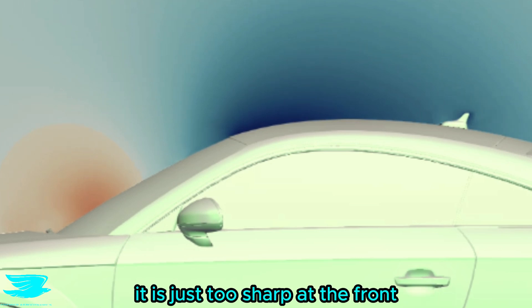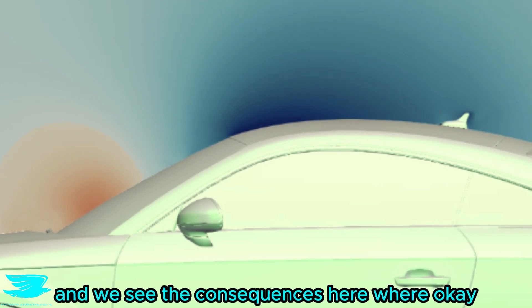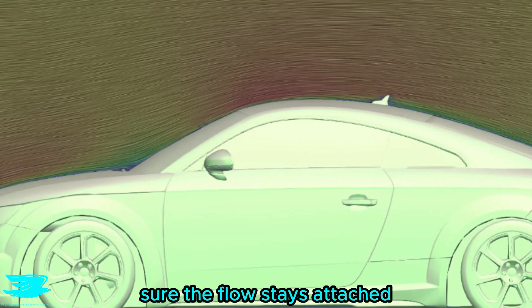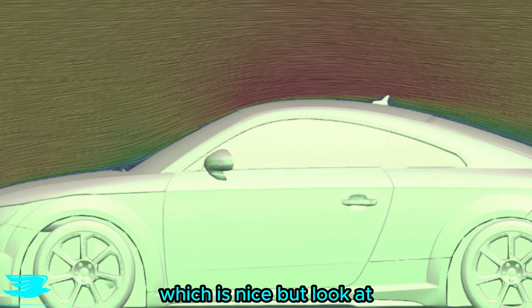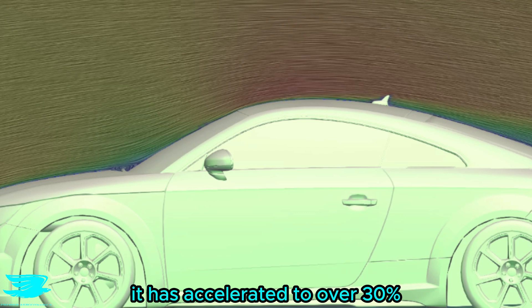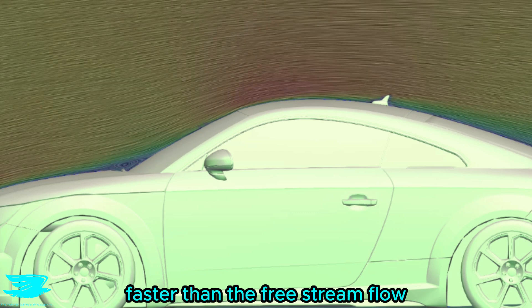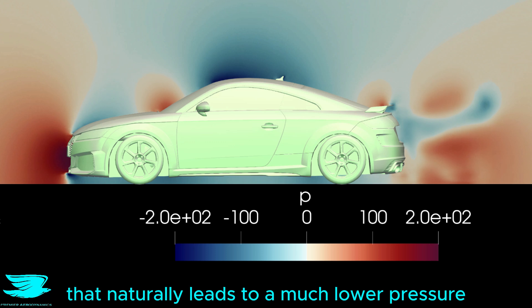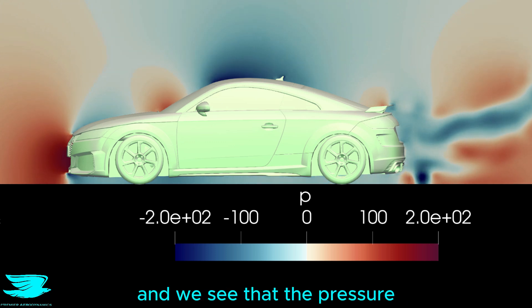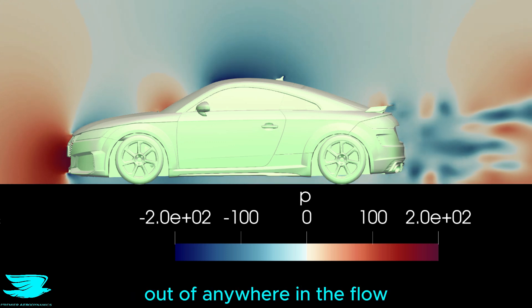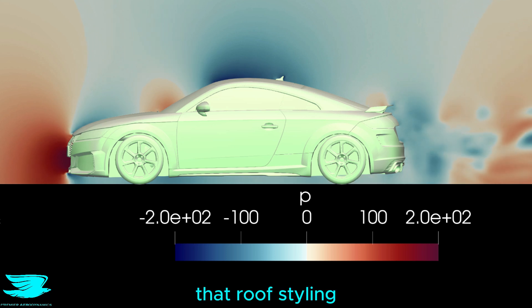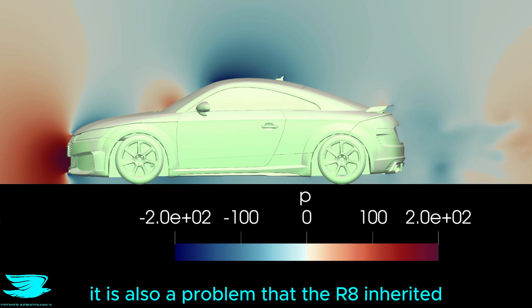It is just too sharp at the front, and we see the consequences here were okay. Sure, the flow stays attached, which is nice, but look at just how red the flow is. It has accelerated to over 30% faster than the free stream flow. That naturally leads to a much lower pressure, and we see that the pressure here is the lowest out of anywhere in the flow, and by a long way. That roof styling was the main reason for the TT's long-time instability problem, because it produces so much lift and is over such a large surface area which exacerbates the problem. It is also a problem that the R8 inherited.